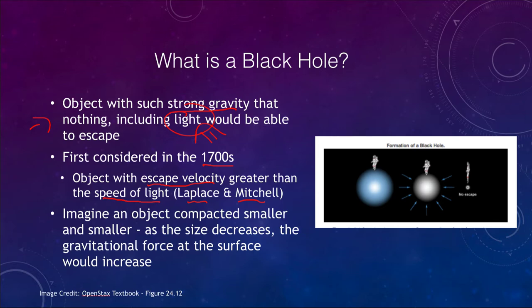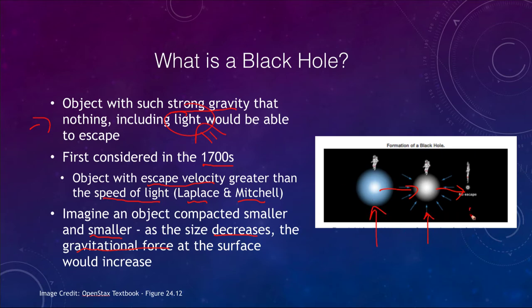The idea was simply based on the fact that if you compressed an object small enough, its escape velocity would increase. If we look at an object and make it smaller and smaller, the size decreases, the gravitational force at the surface increases, and the escape velocity gets larger and larger. So it's easier to escape from a larger object, harder from a smaller one, and may be impossible from a much tinier object, because of the intensity and how deep the gravitational well is as you compress that material down.